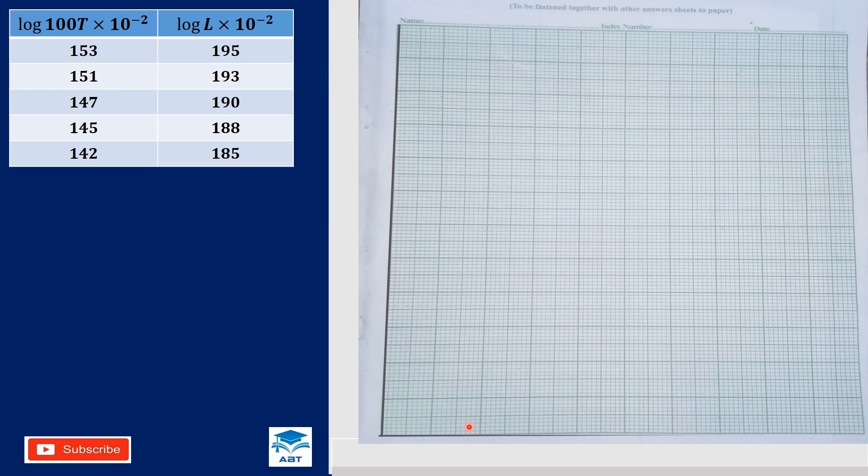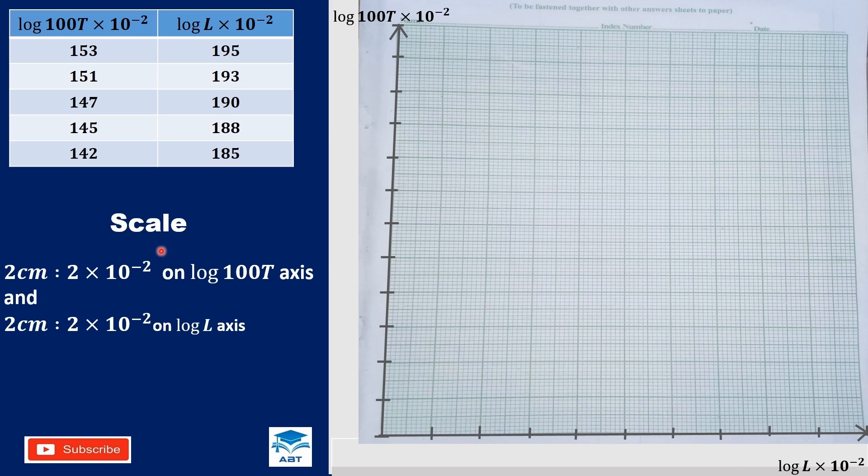So we draw the vertical and horizontal axis. We are plotting a graph of log 100T on the vertical axis and log L on the horizontal axis. So we choose a scale of 2 cm to 2 times 10 to the negative 2 on both axes. So for the vertical axis, we start from 1, 4, 0 since the minimum value is 1, 4, 2. So the next will be 1, 4, 2, and then 1, 4, 4, 1, 4, 6, 1, 4, 8, 1, 5, 0 in that order.